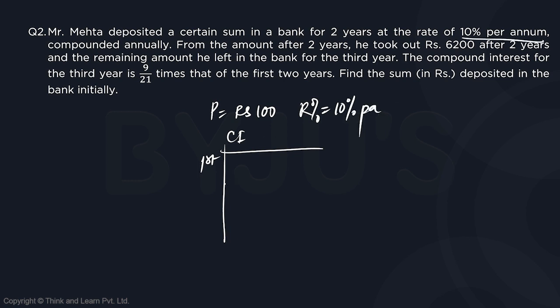So in the first year, we will be getting 10% of 100, which is rupees 10. In the second year, we will be getting rupees 10 as well and another 10% of 10, that will be one rupee. So the interest earned at the end of two years is rupees 21.